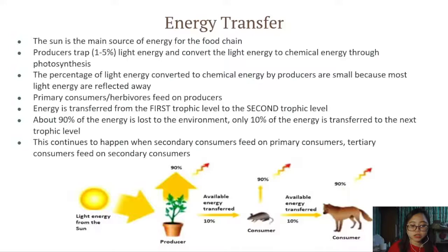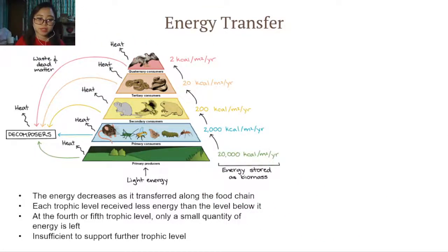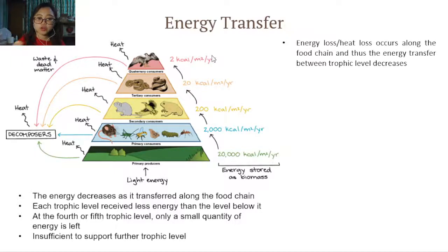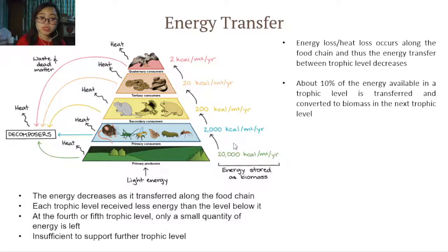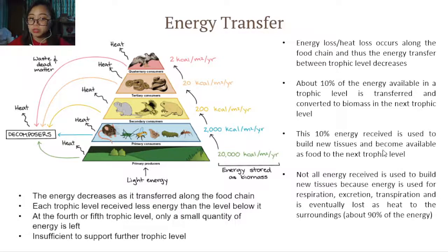This continues to happen as secondary consumers feed on primary consumers and tertiary consumers feed on secondary consumers — only 10% of energy is carried to the next level. Energy loss or heat loss occurs along the food chain, so the energy transferred between trophic levels decreases. About 10% of the energy available in a trophic level is transferred and converted to biomass in the next trophic level. This 10% is used to build new tissues and become available as food to the next trophic level. Energy is also used for respiration, excretion, and transpiration, meaning about 90% of energy is lost.